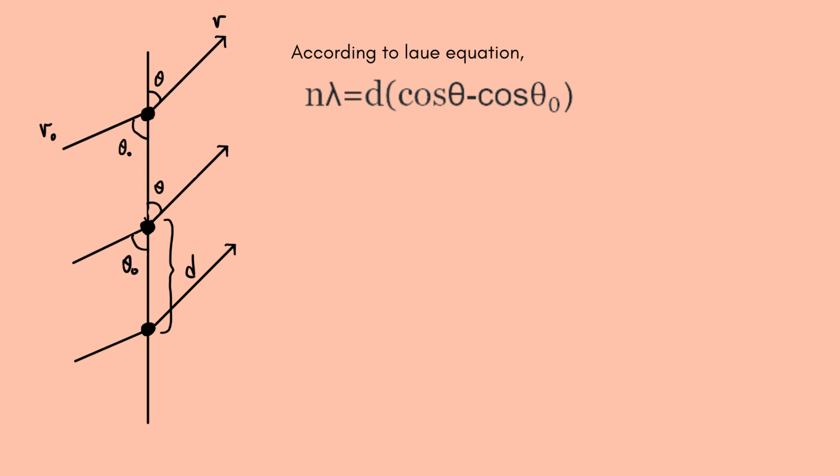We have some relationships here. The direction of our incoming x-rays are represented by the vector r naught. The angle in which r naught is making to our crystal, we are going to call it theta naught. And then we are going to say that the scattered radiation is described by the unit vector r and it makes an angle theta with the crystal, and theta naught and theta are not necessarily equal.